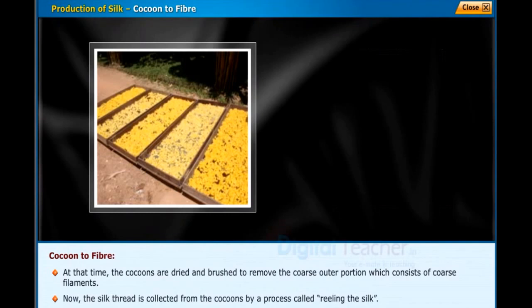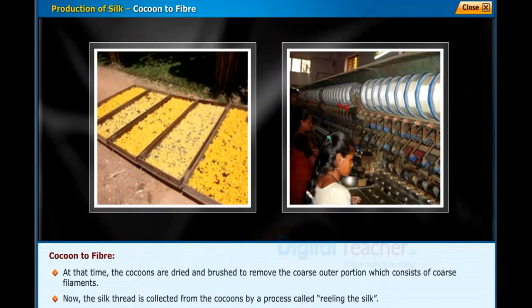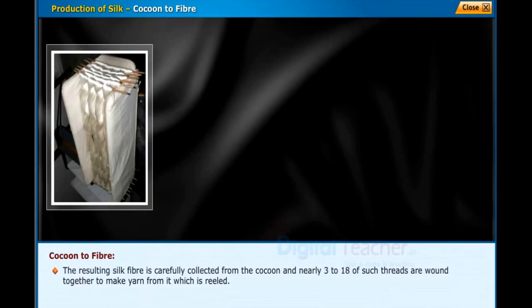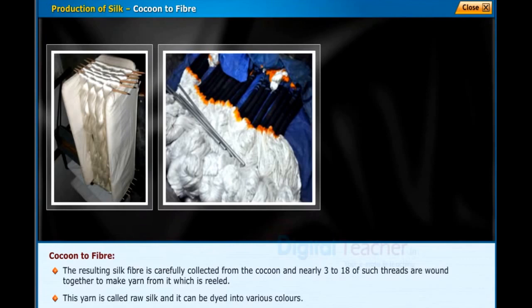The silk thread is collected from the cocoons by a process called reeling. Silk reeling is done with special machines called reelers and twisters. The resulting silk fiber is carefully collected from the cocoon, and nearly three to eighteen such threads are wound together to make yarn, which is then reeled.